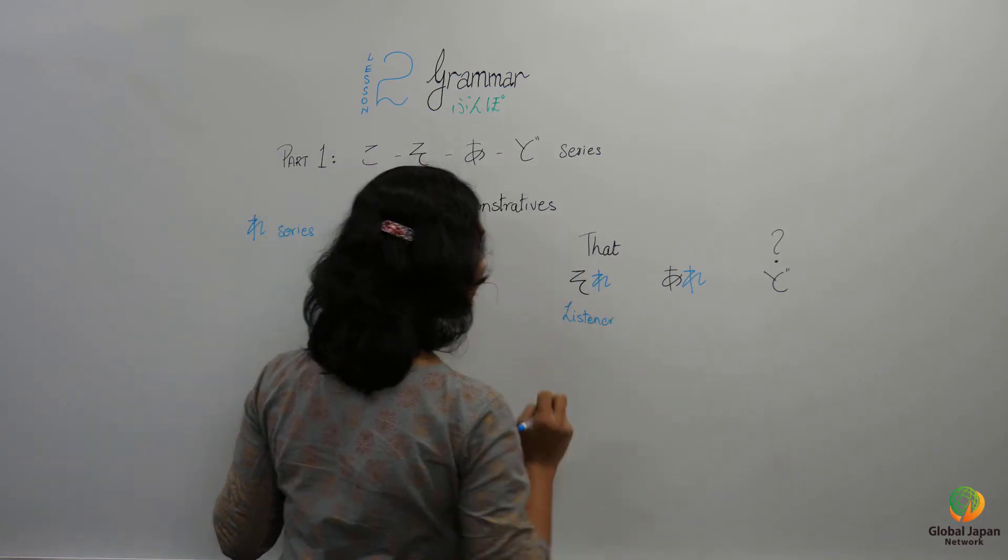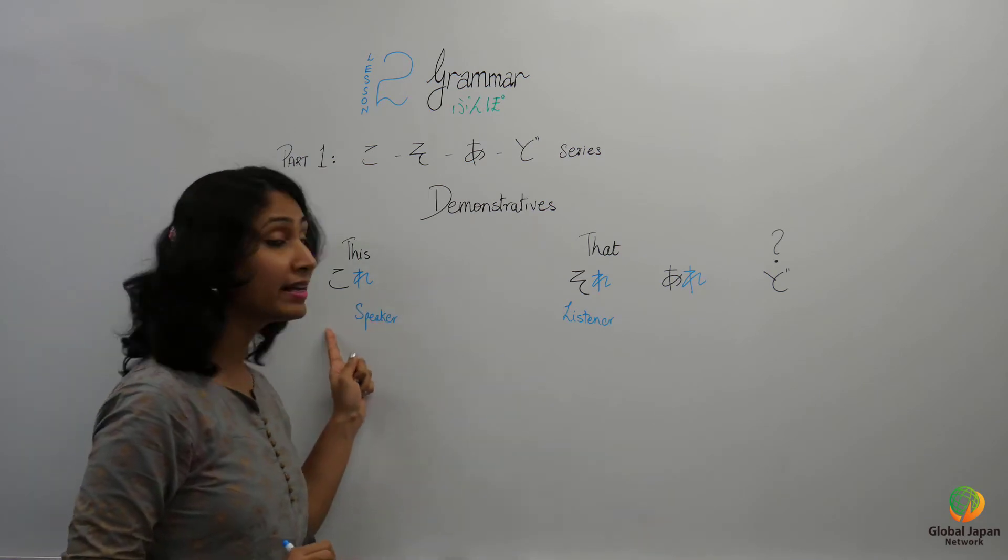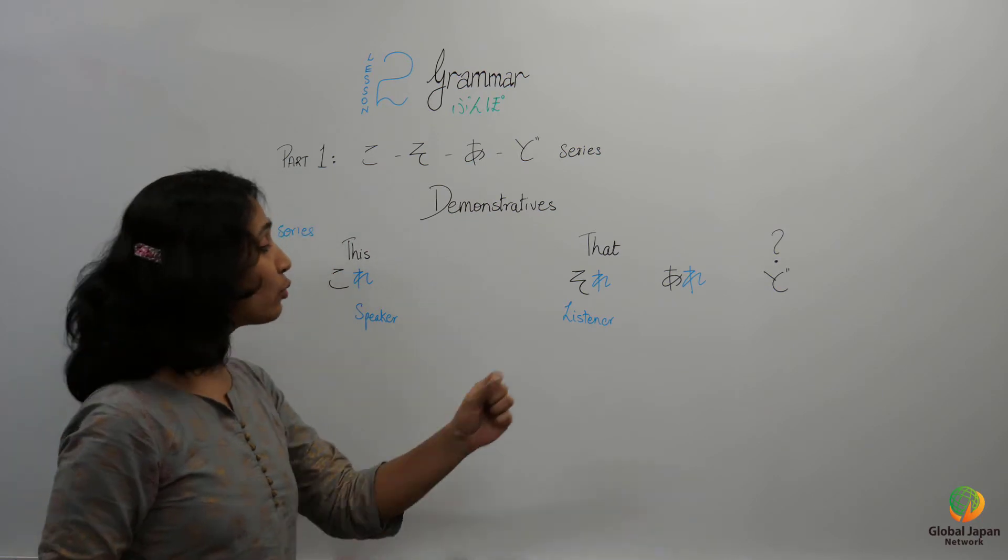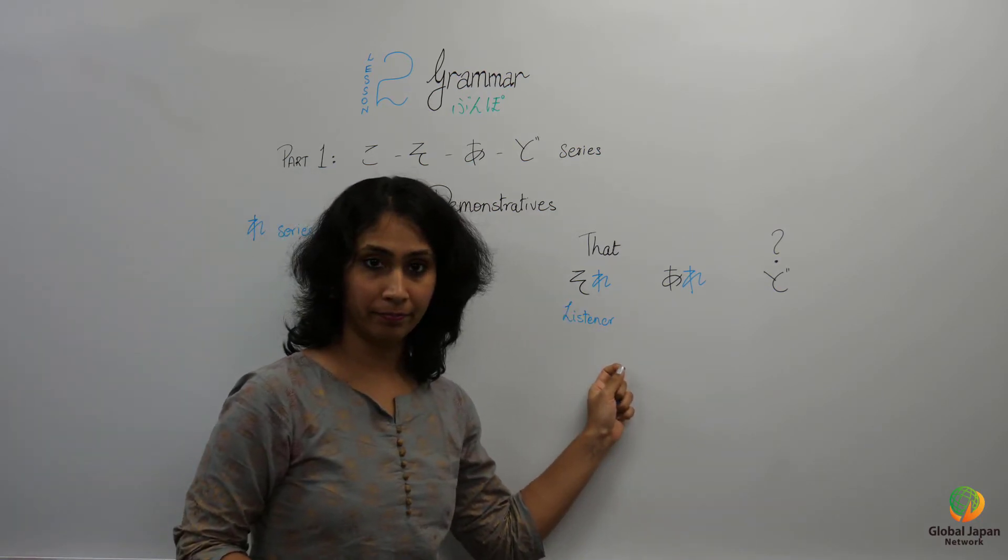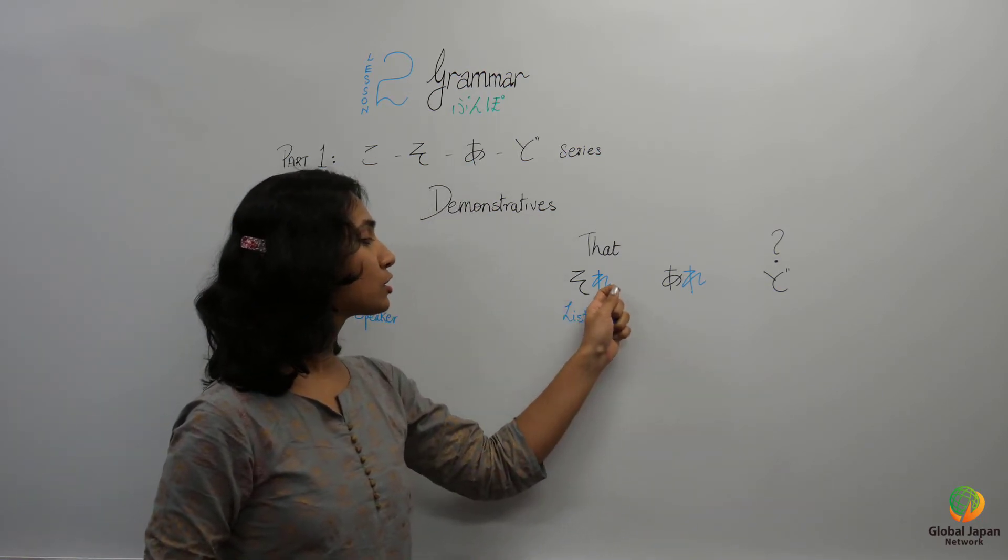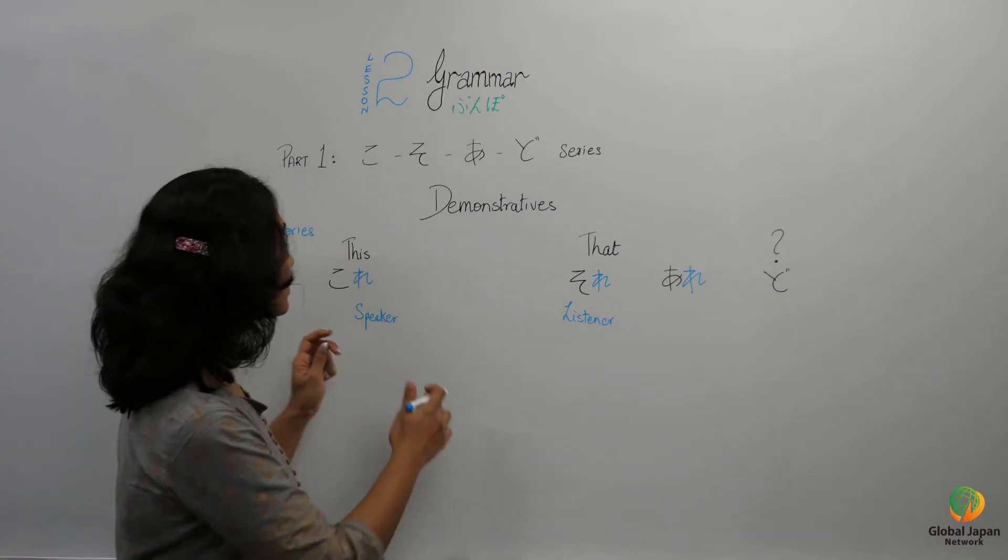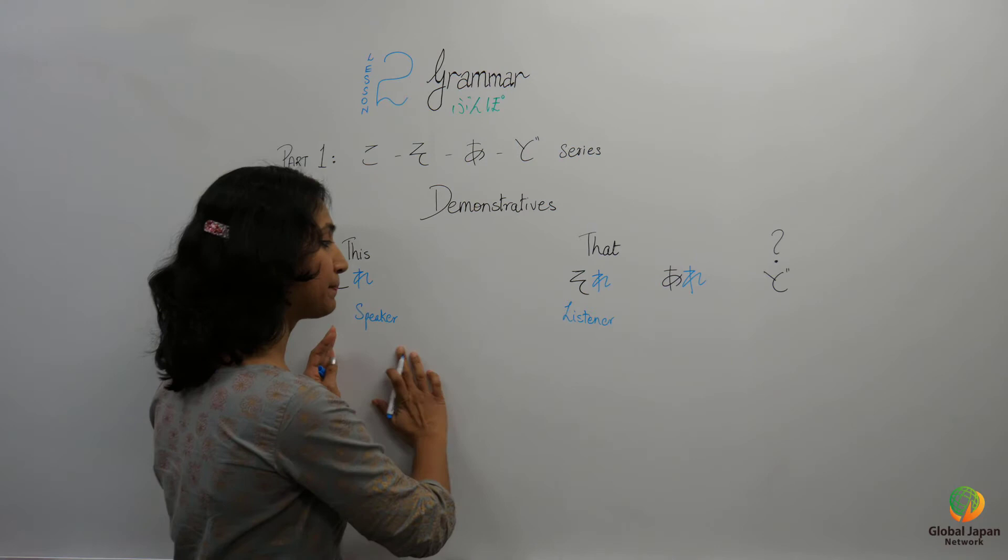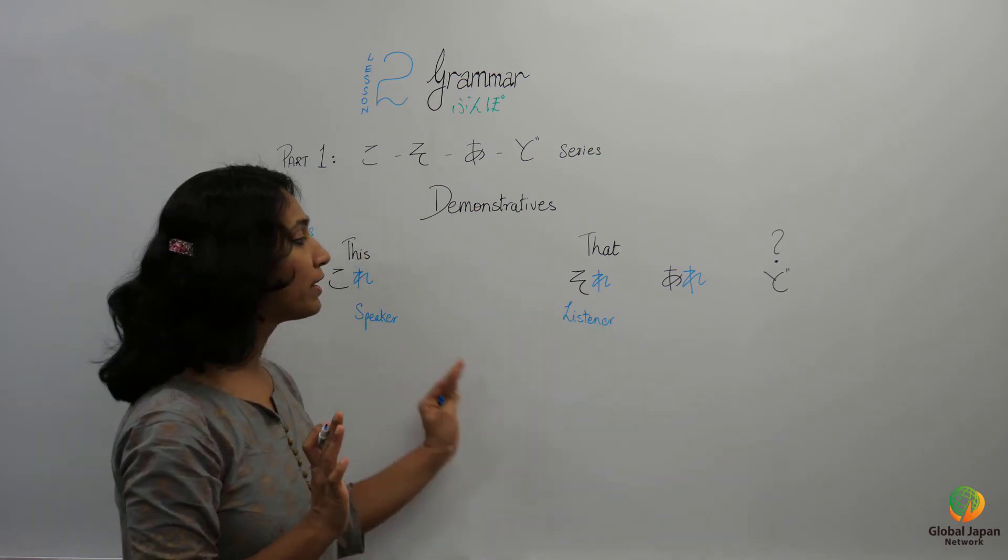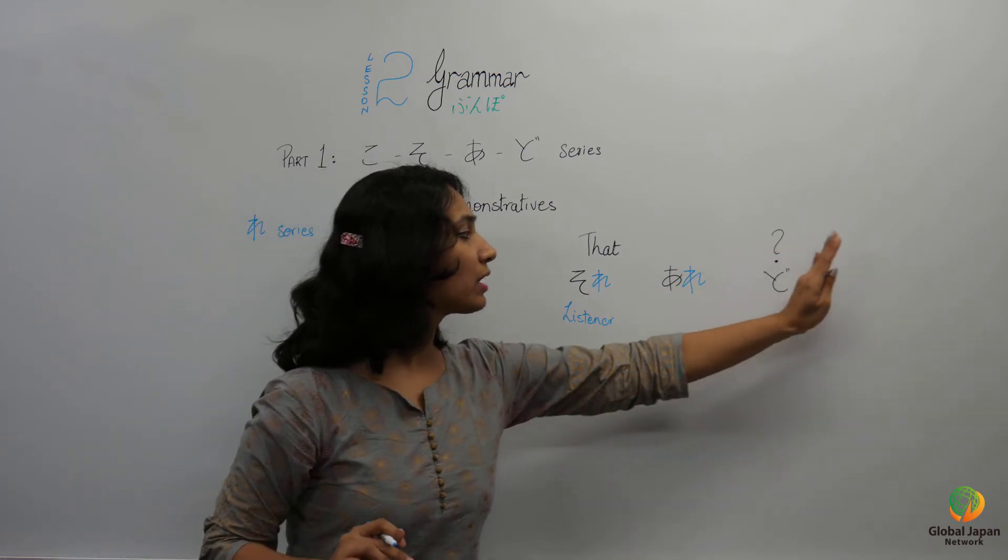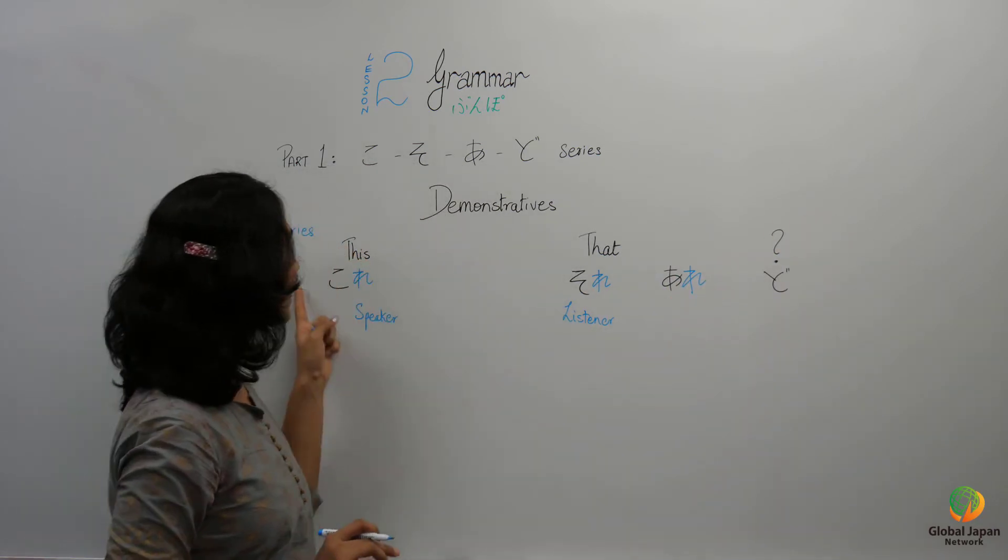So what did I tell? Kore is anything near the speaker. Anything which is near the listener would be referred to as sore. And a thing which is far away from both the speaker and the listener would be referred to as are. This we will come to it afterwards.